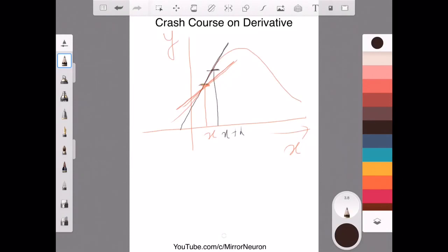And what happens is, if I take h to be as small as possible, and it say towards zero, what would happen is my black line here and my red line here, they kind of will be parallel to each other and will be very close to each other.